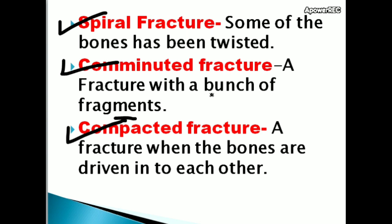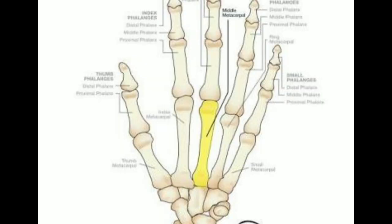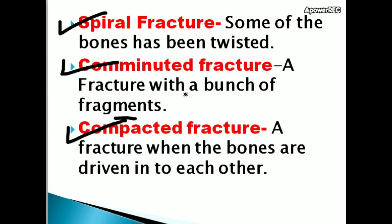Comminuted fractures usually happen in small bones — the small bones in the hands or feet are highly susceptible. They commonly occur after vehicle or car accidents. Compacted fracture is when bones are driven into each other; comminuted fracture involves a bunch of bone fragments.